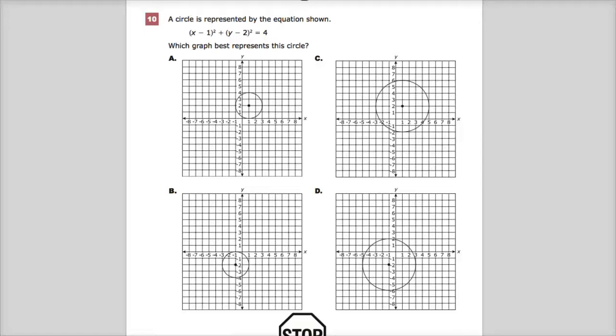Welcome, this is question number 10 on the 10 Ready Geometry Practice Test. The question says the circle was represented by the equation (x - 1)² + (y - 2)² = 4.